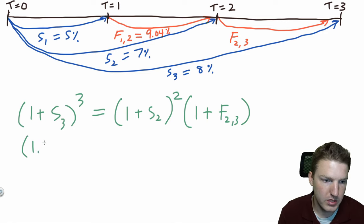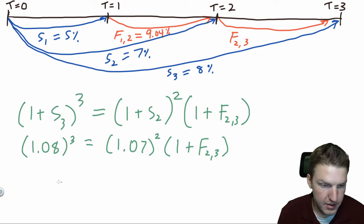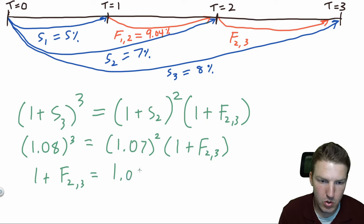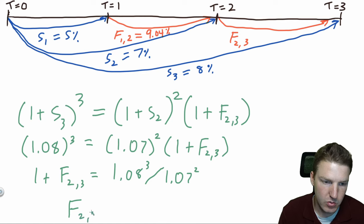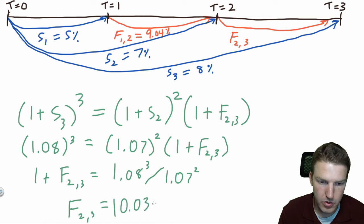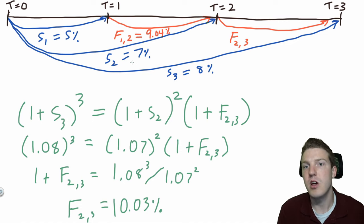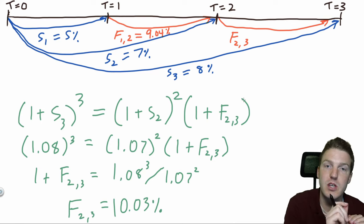So we say 1.08 to the power of three equals 1.07 to the power of two multiplied by (1 + F2,3). Then (1 + F2,3) equals 1.08³ divided by 1.07². Solving for that and subtracting by one, we find this forward rate is actually equal to 10.03%. So earning 7% in year one, 7% in year two, and 10.03% in year three would be equivalent to earning a compounded 8% interest rate three times.